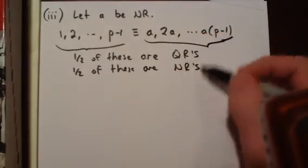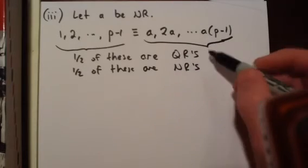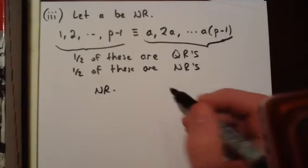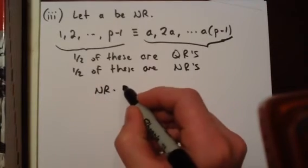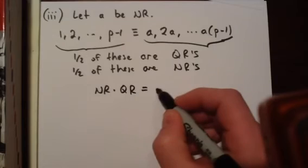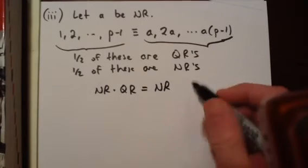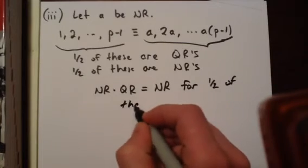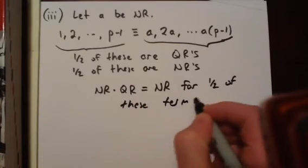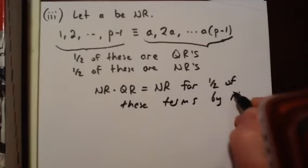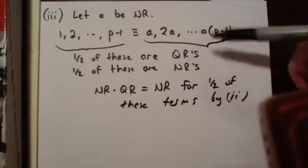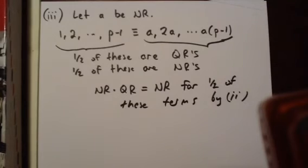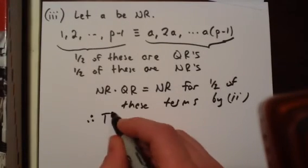So A is a non-quadratic residue. So over here, these two statements hold as well because these lists are congruent. And so what we have is a non-quadratic residue times a quadratic residue equals a non-quadratic residue for one half of these terms. And the fact that exactly half of these are quadratic residues and half of these are non-quadratic residues. Therefore, the other half must be quadratic residues.